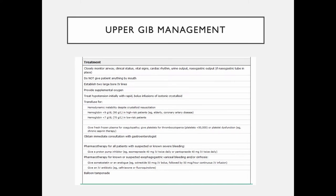For upper GI bleed management, we like large bore IVs to get a lot of fluid and blood products into the patient right away, plus supplemental oxygen as needed. We treat hypotension initially with rapid bolus infusions of crystalloid. More recently, based on articles in the New England Journal, we really prefer lactated Ringer's over saline — patients who get fluid resuscitation with LR tend to have fewer episodes of renal failure.